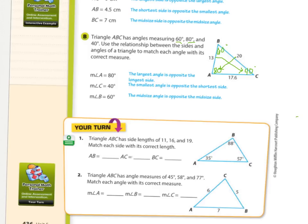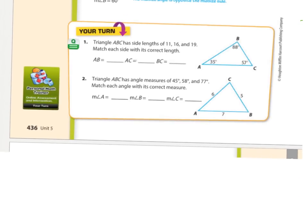Triangle ABC has side lengths of 11, 16, and 19. Match each side with its correct length. The biggest angle is 88 degrees, so the biggest side is 19. The smallest angle is 35, so the smallest length is 11. And 57 takes the middle length of 16. So: AB is 16, AC is 19, and BC is 11.